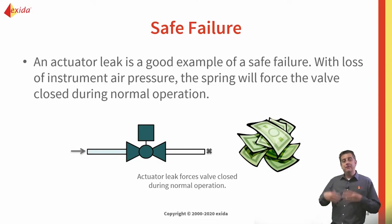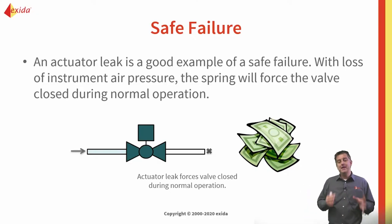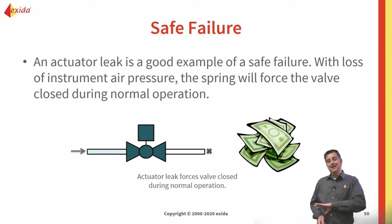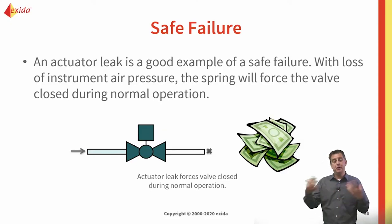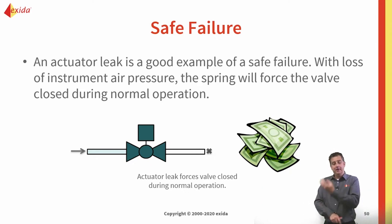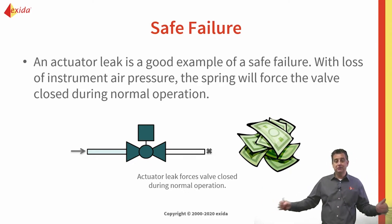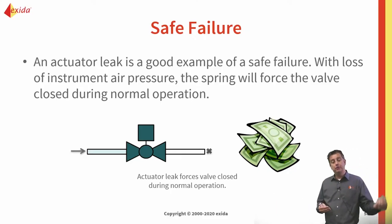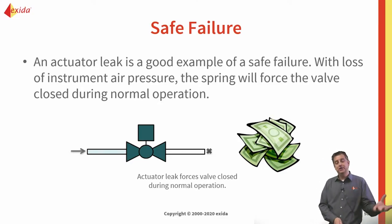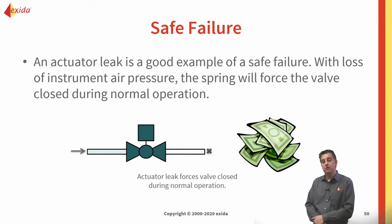In functional safety, we're really focused on dangerous failures — making sure our safety instrumented functions perform when they need to. We tend to somewhat neglect safe failures, but any production manager or organization will say they don't want a spurious failure every day. In our simplified equation we only look at dangerous failures, but our calculations do compute both the probability of failure on demand as well as the mean time to fail spurious — giving an indication of how often the safety function may cause an unwarranted transition to the safe state.